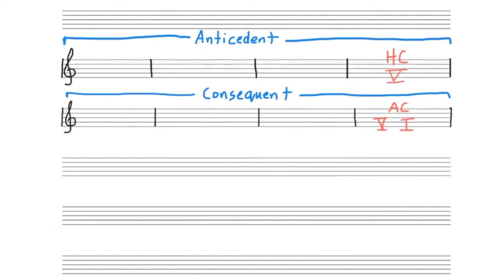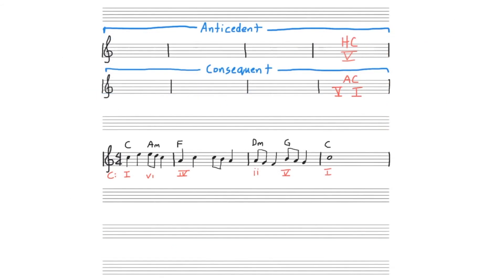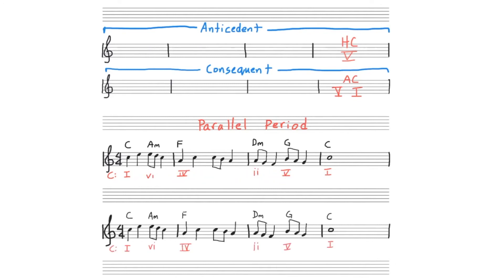Now let's explore the three types of period forms by using the musical phrase that was composed in our last video. Let's develop this phrase into a parallel period form. In a parallel period form, the two phrases can be almost identical, and in many compositions they are. They can also be very similar. So to begin to develop our parallel period, I will rewrite this as our second phrase.